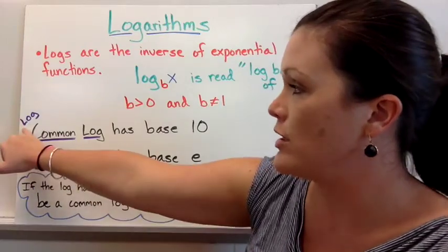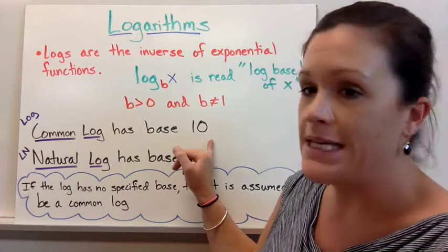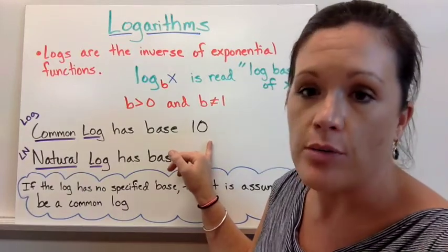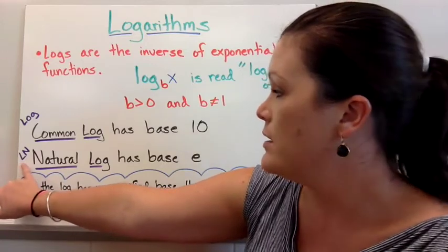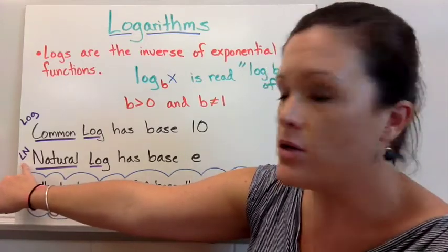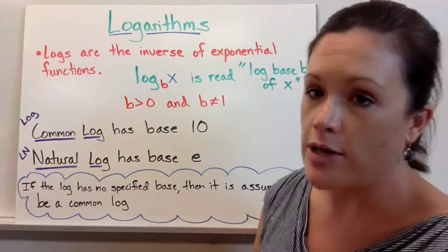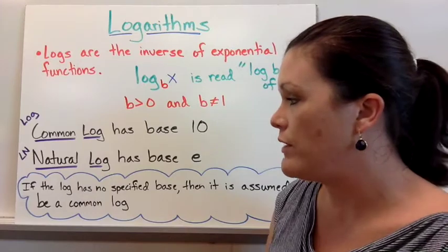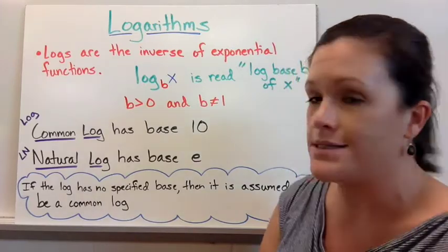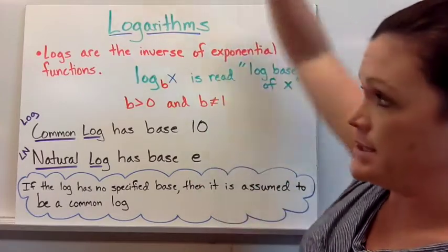Common log, which we write as log and it's found on our calculator as just that button, has a base of 10. If you don't see another number, you can understand that it's just a 10 that's understood to be there. Natural log, which is LN on your calculator, has a base of E. If the log has no specified base, it is assumed to be a common log with base 10 or E.